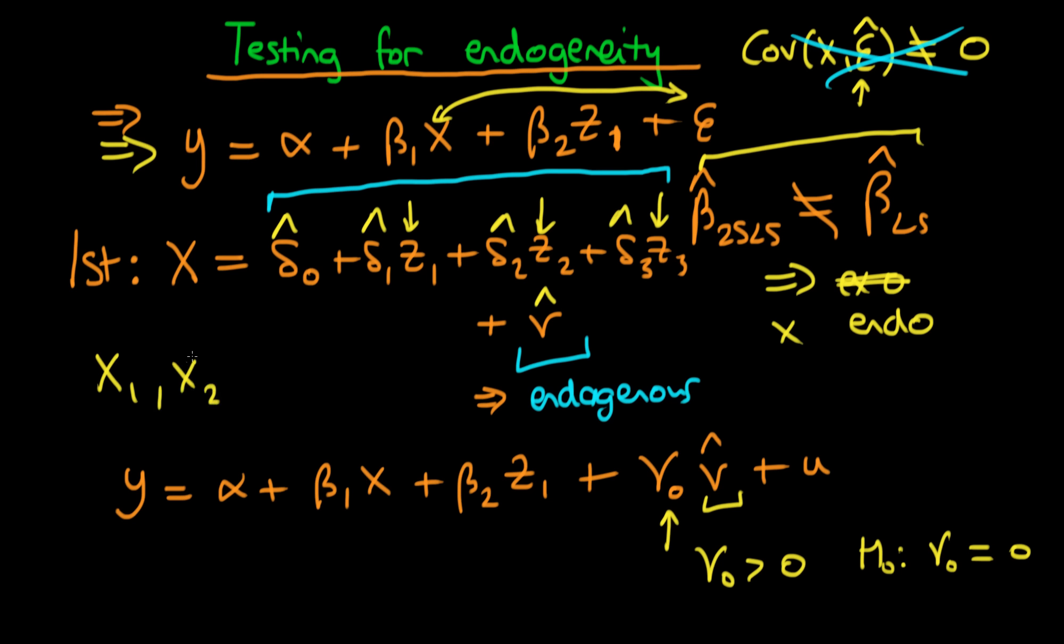Okay, so that's the case for a single explanatory endogenous variable. How do we go about doing this for multiple explanatory endogenous variables? Well, it's much the same. Essentially, if we had two suspected endogenous variables, x1 and x2, then in our first stage, we would just come up with two estimates of the endogenous parts of each of those variables, v1 hat and v2 hat.